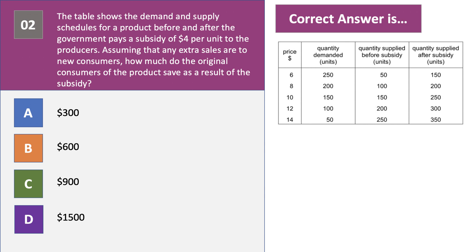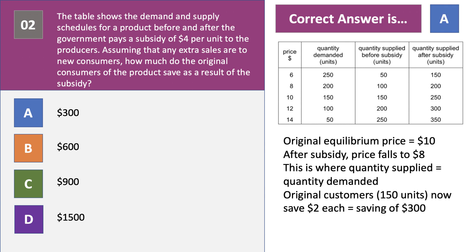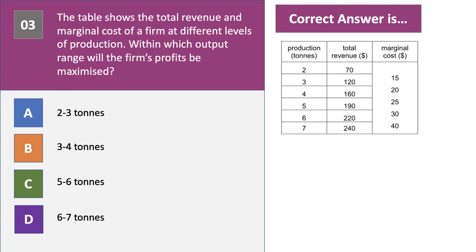The correct answer to question two is A — $300. The original equilibrium price is $10, with supply and demand at 150 units. After the subsidy the equilibrium price falls to $8, where both demand and supply equal 200 units. Original customers bought 150 units, were paying $10 and are now paying $8 — a saving of $2 each. Total saving for original consumers is $300.